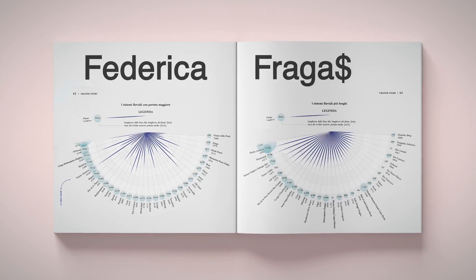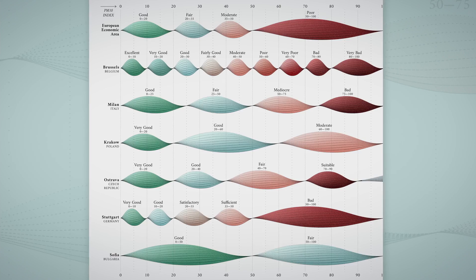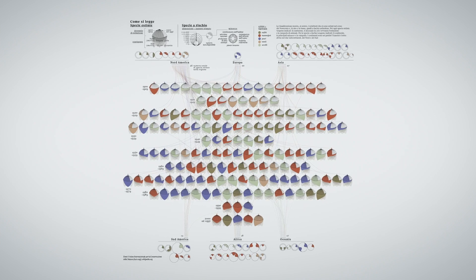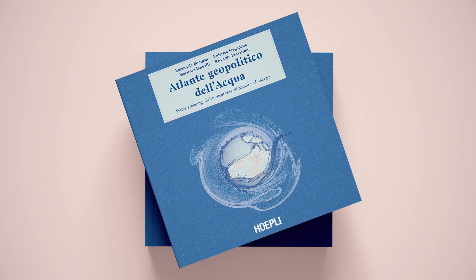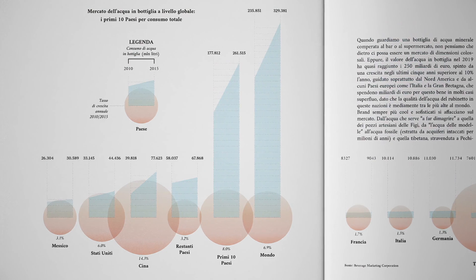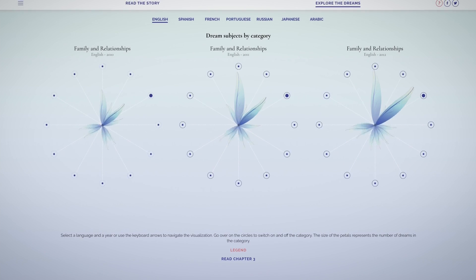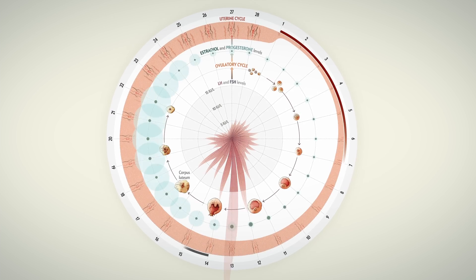Hi, my name is Federica Fragapane and I'm an information designer. I collaborate with organizations, agencies and magazines designing data visualizations. You can also find my works in such different places as a children's book or an atlas that combines infographics and cartography. Some of my clients are Google, the United Nations, BBC Science Focus and Scientific American.